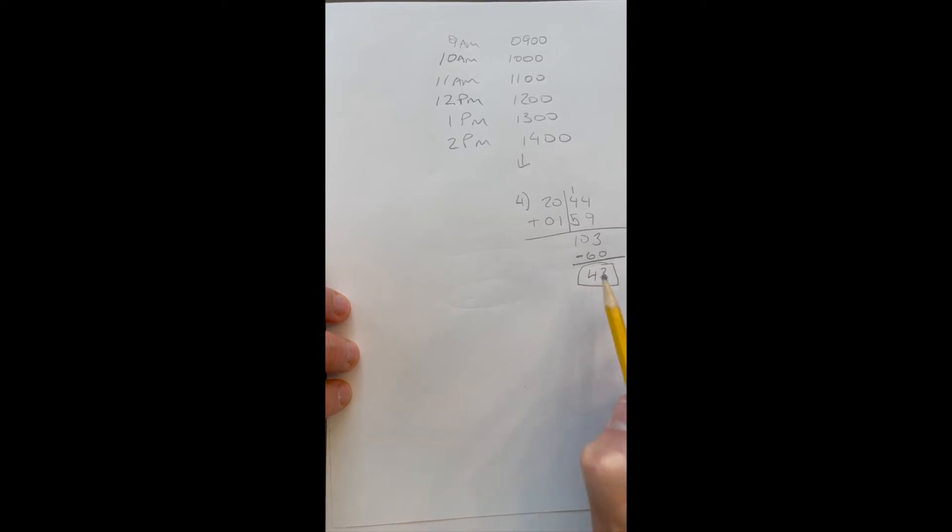Now to the hours. I subtracted one hour in the form of 60 minutes from my 103 minutes, so I need to do something with that hour. I'm just gonna add it to the hour side. I've got one plus 20, that's 21, 21 plus one is 22. I end up with 2243 or 10:43 PM.